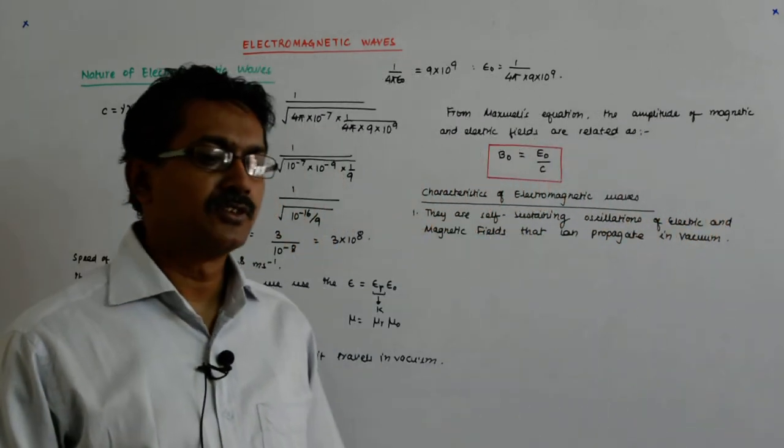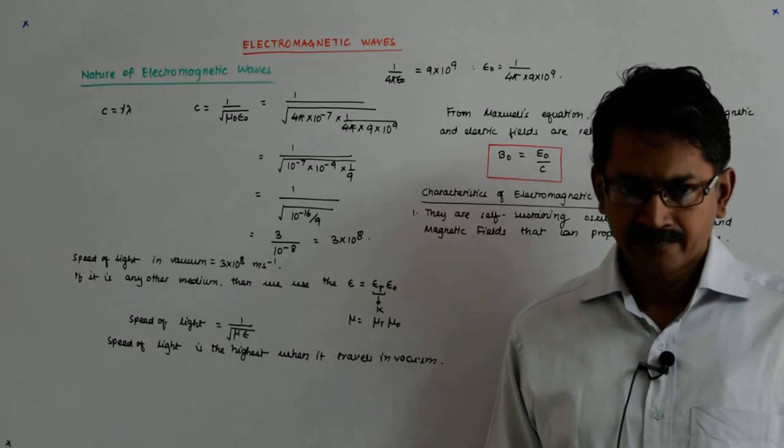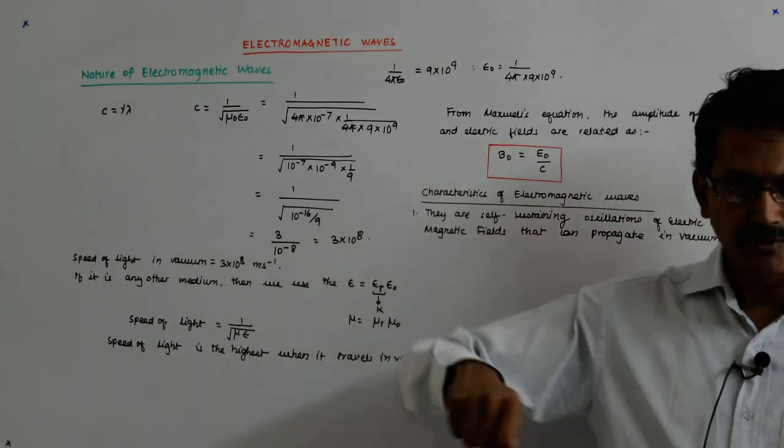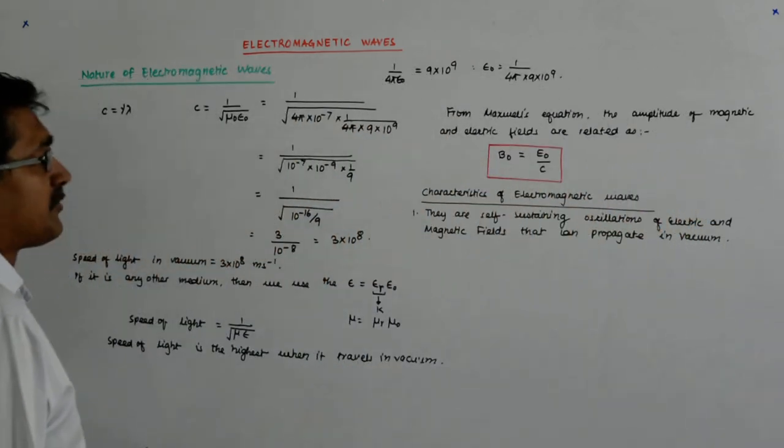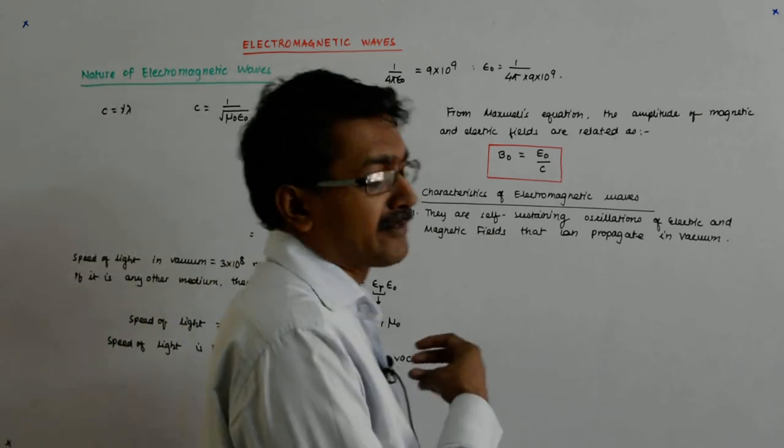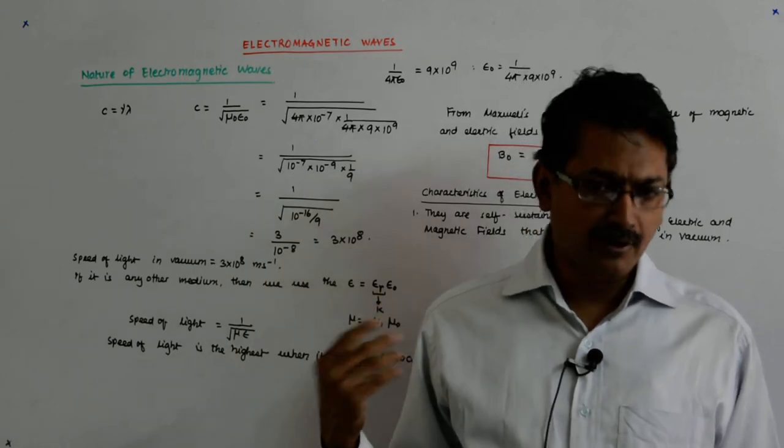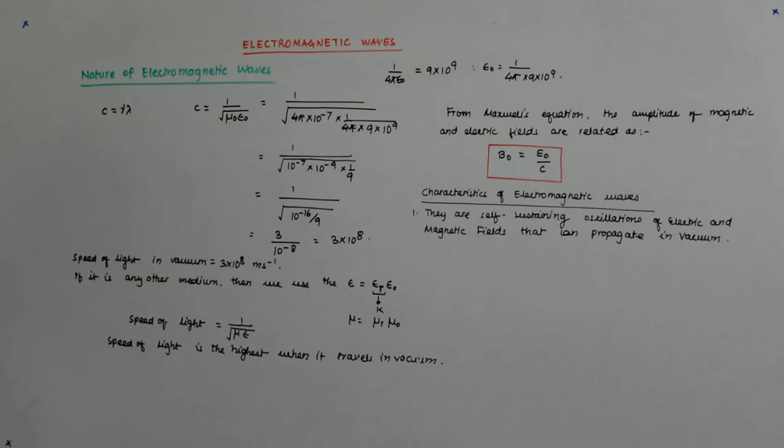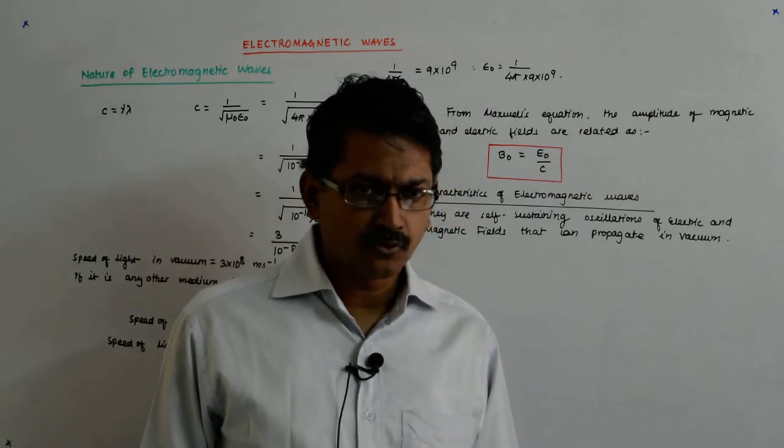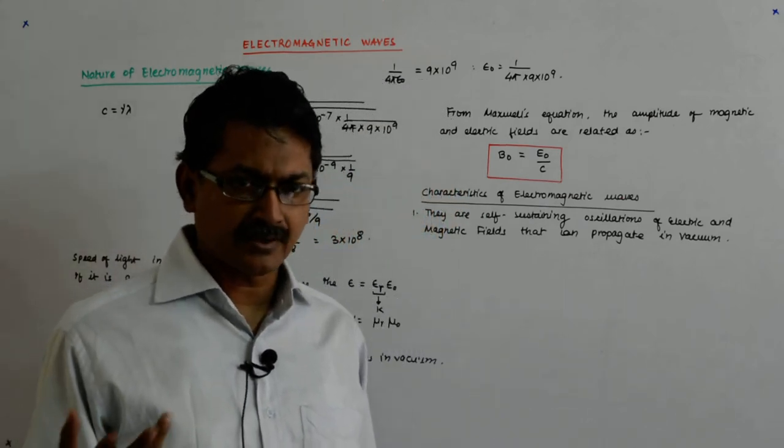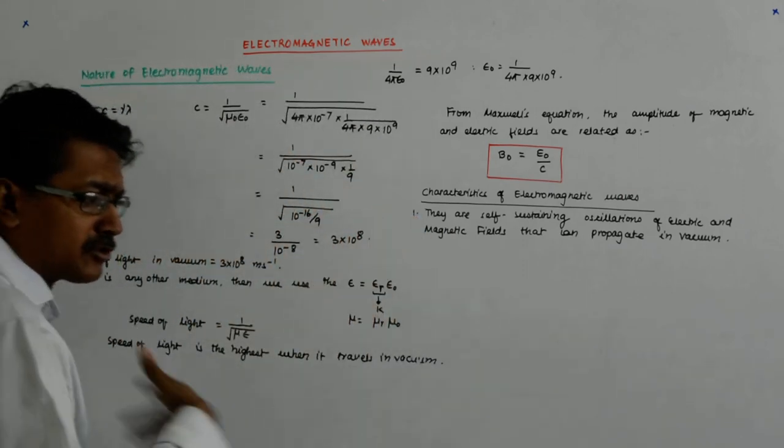We had seen the transverse waves that were being propagated through, say, water or maybe through a rope. If you give a jerk to the rope that we studied in class 11th. This was for the first time that a wave was propagating without any medium. And there was a solid proof for it. What was the proof? The biggest proof was that you are receiving the sunlight. That is the biggest proof. After it was proved that light is also an electromagnetic wave, you have the sunlight and it travels through billions of kilometers through vacuum.